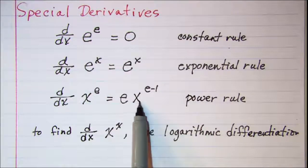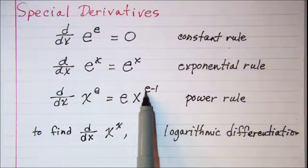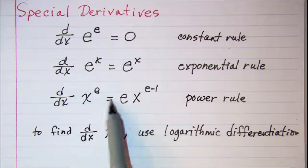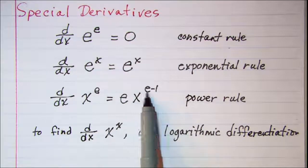So we take our exponent, multiply it by the base x, raised to the exponent decreased by 1. So the derivative of x to the e is e times x to the e minus 1.